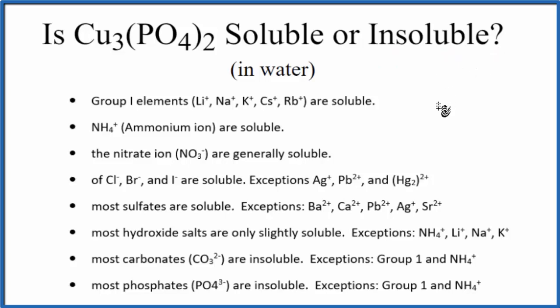There's a few ways we could know that. We could memorize the solubility rules. So we look down the rules here, see phosphates, that PO4 3- phosphate ion, we have it right here.